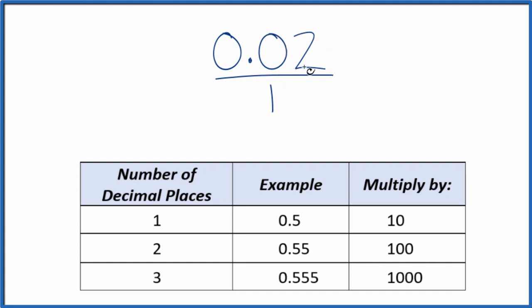What we need to do is get the top here, the numerator, to be a whole number. And since we have 1, 2 decimal places, we could just multiply it by 100. So we multiply the numerator by 100.